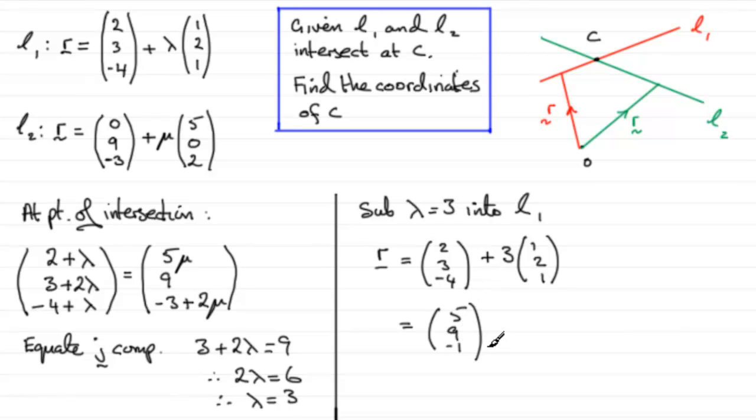And we've got to be careful here because it did say, find the coordinates of C. So, therefore, the coordinates of C must be equal to (5, 9, -1).